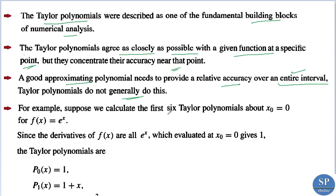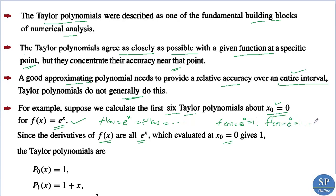For example, consider the first six Taylor polynomials about x_0 = 0 for f(x) = e^x. Since all derivatives of e^x equal e^x, all derivatives at x_0 = 0 equal 1. The Maclaurin series is e^x = 1 + x + x²/2! + x³/3! + x⁴/4! + x⁵/5! + ...